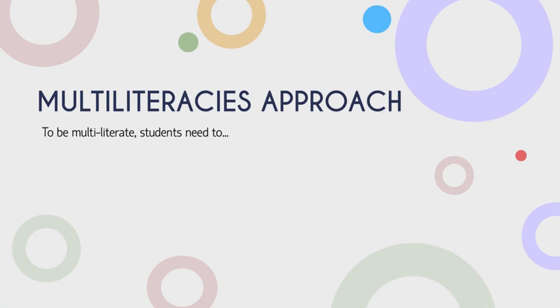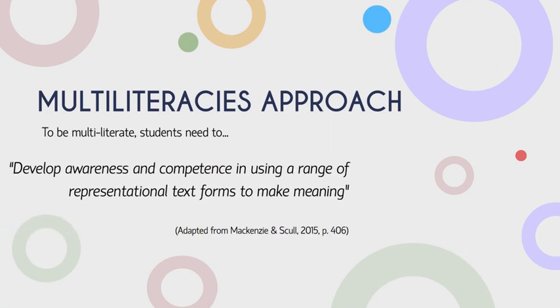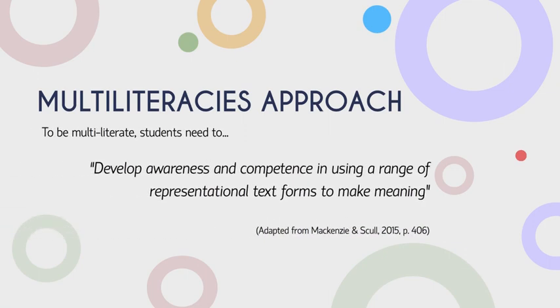To be multiliterate, students need to develop awareness and confidence in using a range of representational text forms to make meaning. Our multiliteracies approach focuses on using the codes and conventions relevant to five different systems of literacy.